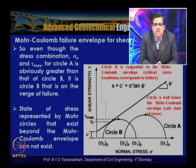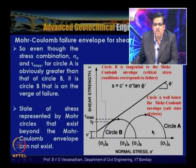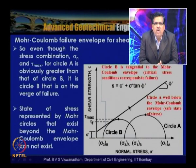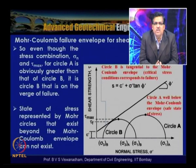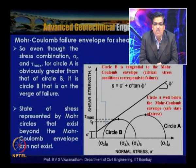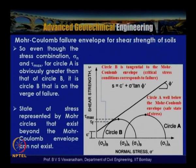A Mohr circle that exists beyond the Mohr-Coulomb failure envelope cannot physically exist — failure would already have taken place. A circle well below the envelope is in a safe state; when it becomes tangent to the envelope, failure is reached. No Mohr circle can exist above the failure envelope.